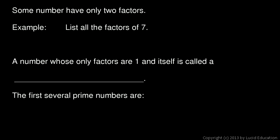Now it turns out that some numbers have only two factors. For example, we're told here to list all the factors of 7. So what numbers can multiply to give me 7? Well, 1 times 7 comes to mind, and that's it.